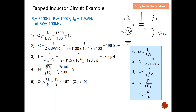These five steps are used to calculate Qp, which then determines which formula set to use for L1 and L2. Step 1: Qt (circuit Q) equals f0 over bandwidth, giving Qt = 15. Step 2: C equals 1 over (2π × bandwidth × Rt), where Rt equals Rs = 8100 ohms, giving C = 196.5 picofarads. Step 3: L equals 1 over (ω² × C), where ω = 2πf at f = 1.5 MHz, giving L = 57.3 microhenries. Step 4: n equals Rt over R2, where Rt is the higher resistor and R2 is the lower, giving n = 9.